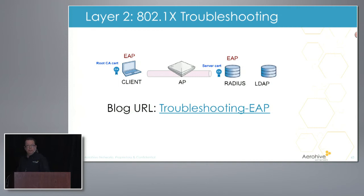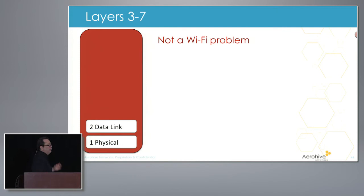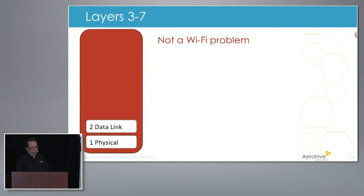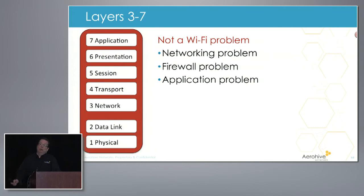We're moving on from Wi-Fi problems. Wi-Fi gets blamed quite a bit for problems it is not causing. If it's not a layer 1 or a layer 2 problem, it's not a Wi-Fi problem — it's very often a networking problem. Look at layer 3. If it's layer 4, very often it's a firewall problem. And as you move up the stack, it's an application problem. If you can eliminate layer 1 and layer 2, you can start focusing on where the real problem is. From the end user perspective, they don't know and don't care — they just know they can't get to the internet over their Wi-Fi.